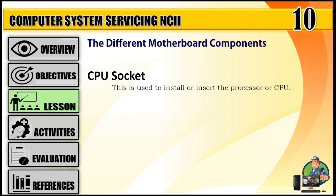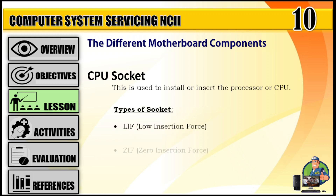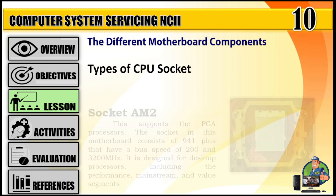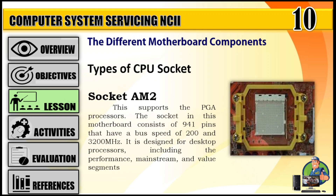CPU socket: This is used to install or insert the processor or CPU. Types of socket: LIF (low insertion force) and ZIF (zero insertion force). Socket AM2 supports PGA processors; the socket consists of 941 pins with a bus speed of 203,200 megabits. It is designed for desktop processors, including the performance, mainstream, and value segments.